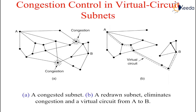An alternative approach is to allow a new virtual circuit but carefully route all new virtual circuits around the problem area. For example, consider a subnet shown in the figure in which two routes are congested as indicated. Suppose that a host attached to router A wants to set up a connection to a host attached to router B. Normally, this connection would pass through one of the congested routers. To avoid this situation, we can redraw the subnet omitting the congested routers and all of their lines. The dashed line shows a possible route for the virtual circuit that avoids the congested routers.